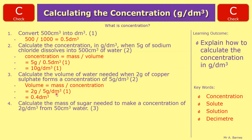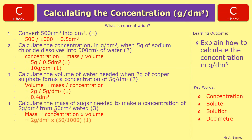Question 4: calculate the mass of sugar needed to make a concentration of 2 grams per decimetre cubed from 50 centimetres cubed of water. The equation is mass equals concentration times volume. Concentration is 2 g/dm³; volume is 50 cm³, which we convert by dividing by 1,000 to get 0.05 dm³. So 2 times 0.05 gives an answer of 0.1 grams.